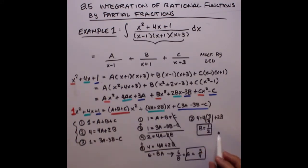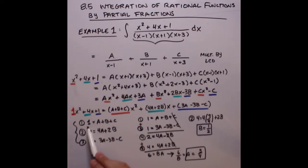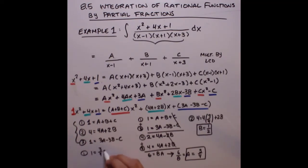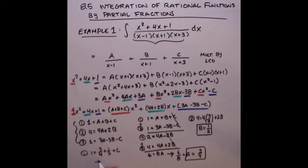To find C, plug A = 3/4 and B = 1/2 into equation 1: 1 = 3/4 + 1/2 + C. Using a common denominator and solving gives C = negative 1/4.